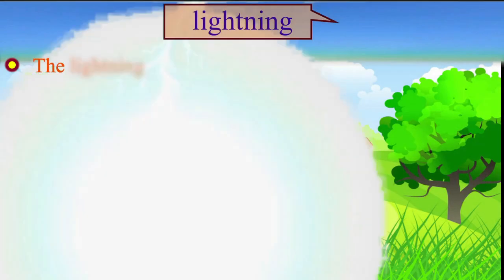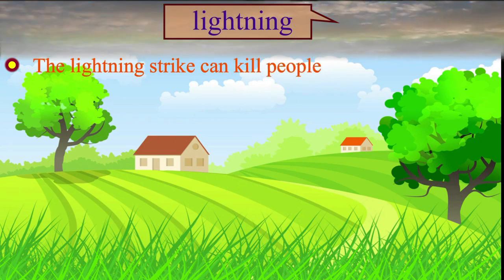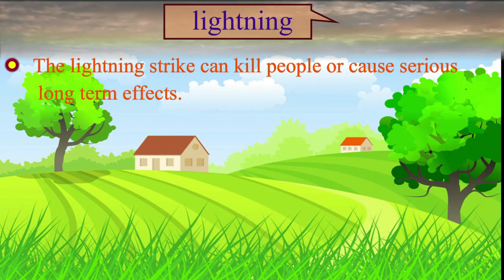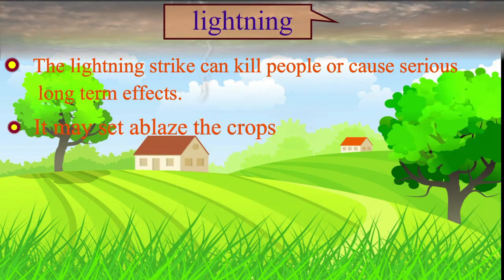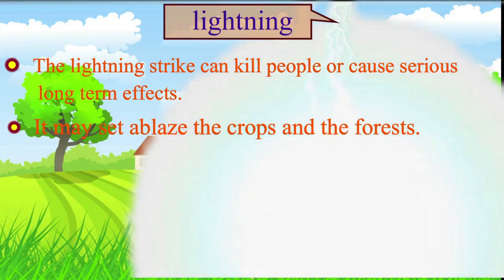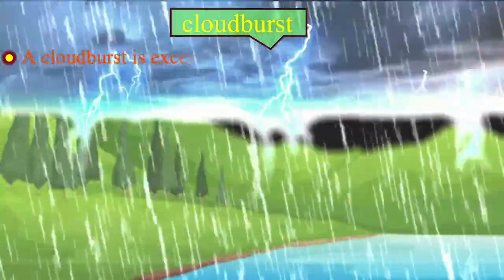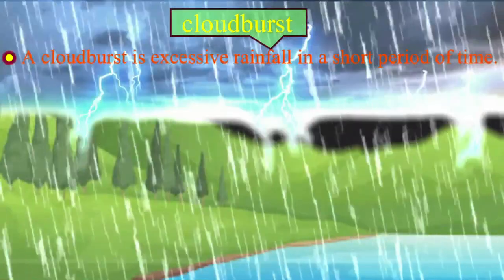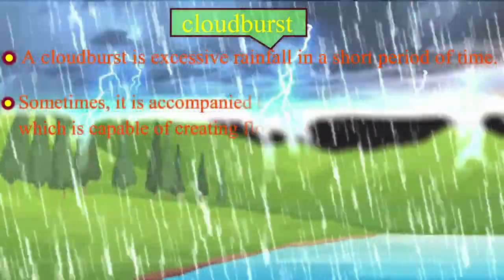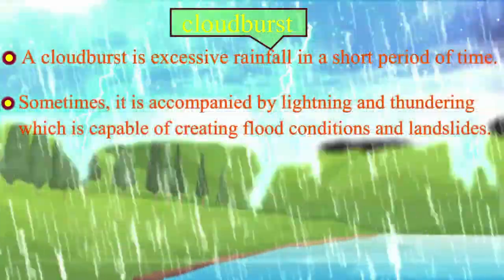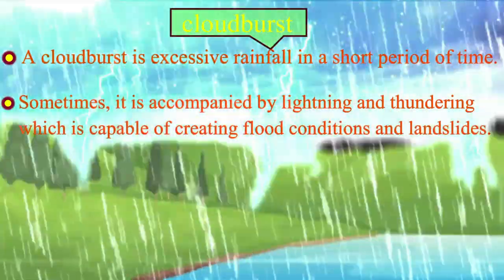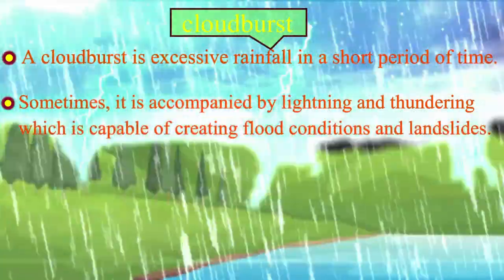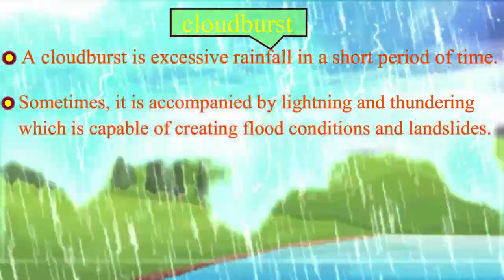The lightning strike can kill people or cause serious long-term effects. It may set ablaze the crops and the forests. A cloud burst is excessive rainfall in a short period of time. Sometimes it is accompanied by lightning and thunder, which is capable of creating flood conditions and landslides.